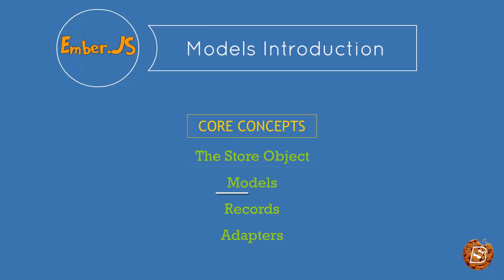The next concept is model. A model is basically a class that defines the properties and behavior of the data that you present to the user — anything that the user expects to see if they leave your application and come back later. Models define the type of data that will be provided by your server. For example, consider a course model which might have a title, author, price, and an online URL to buy that course. These might have different data types — the title and author can be strings, the published date of a course can be a date, and so on.